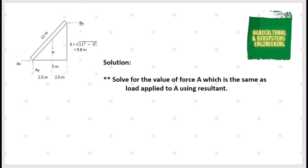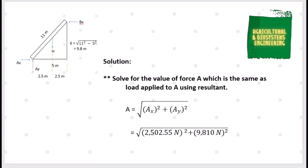Next, we determine the resultant force at A by taking the square root of the sum of the squares of its x and y components. We already solved for Ax of 2502.55 N and Ay of 9810 N, so we simply substitute. We have the square root of (2502.55)² plus (9810)², and we get a final value for A of 10124.17 N.